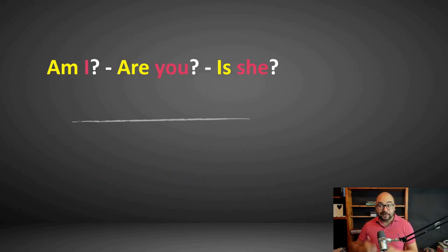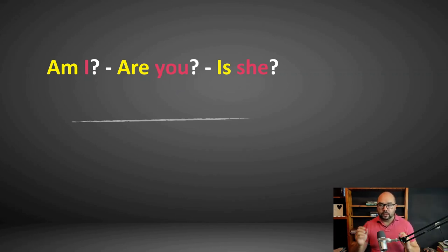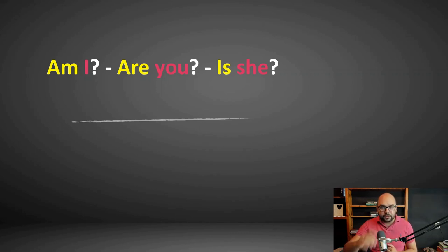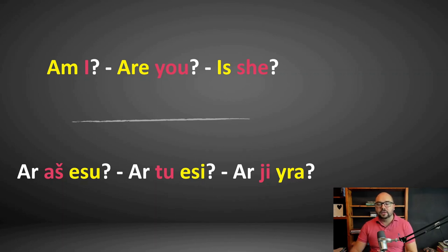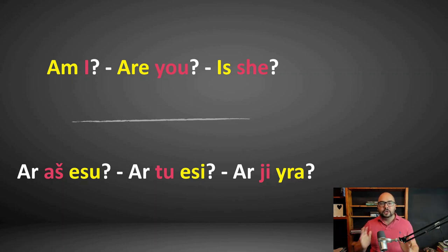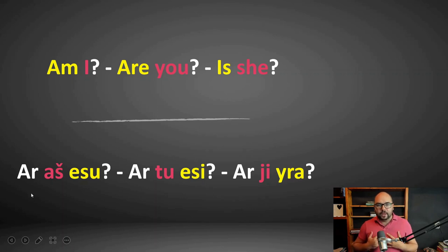Now, if I want to make it into a question — as in am I, are you, is she — in English we switch the verb 'to be' and the subject. But in Lithuanian, the only thing we do is add the word 'ar' in front of the affirmative sentence. We don't switch anything, we don't make any adjustments. We just add 'ar' and that's how we get a question. 'Aš esu' means I am, so 'ar aš esu' means am I — it's already a question.